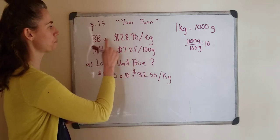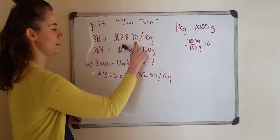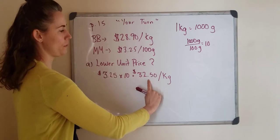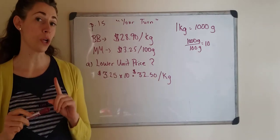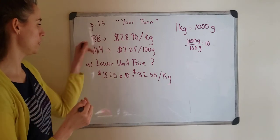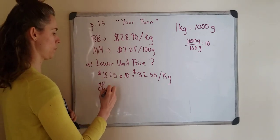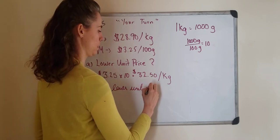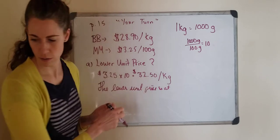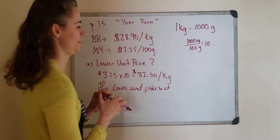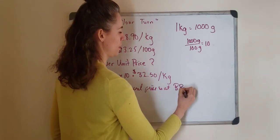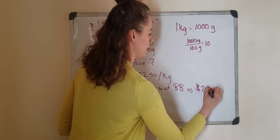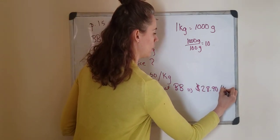The Butcher Block it's $28.90 per kilogram and at the Meat Mart $32.50 per kilogram. So which is the lower unit price? The lower unit price is at the Butcher Block. That price was $28.90 per kilogram.